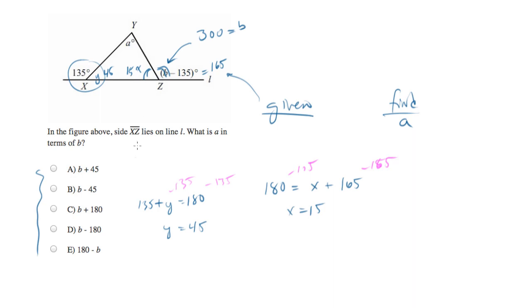And now you can solve for A using the rule that sum of the angles in a triangle equal 180. So 45 plus 15 plus A must equal 180. And if you subtract 45 and 15 from both sides, what you'll find out is that A is equal to 120.